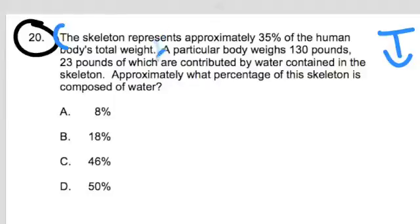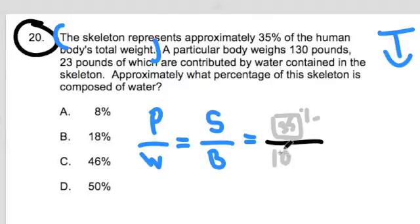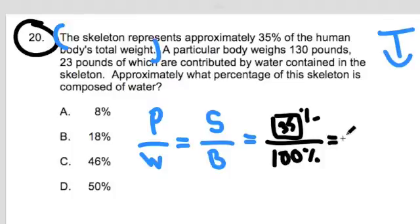First, when I read the problem over I take bits and pieces of information. The skeleton is approximately 35% of the human body's total weight, so we're thinking in terms of part to whole. The skeleton is my part, the whole is my body. In this scenario, the skeleton we don't know, all we know is it's 35%. We're going to say the body is 100% of the whole. The next line says a particular body weighs 130 pounds, so we know that the body weighs 130 pounds.